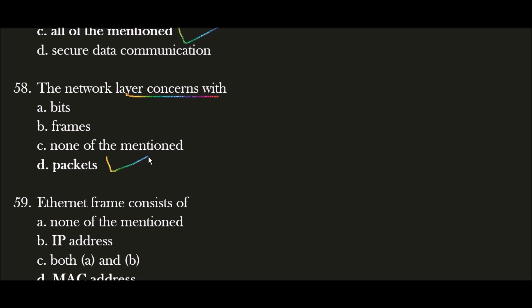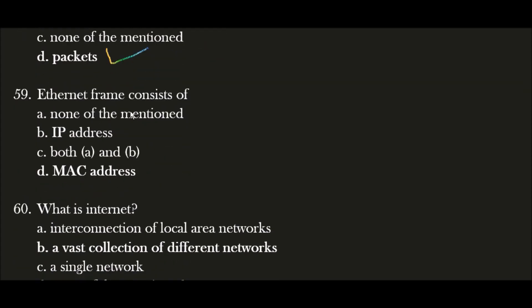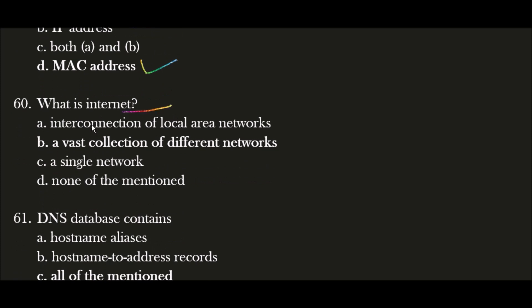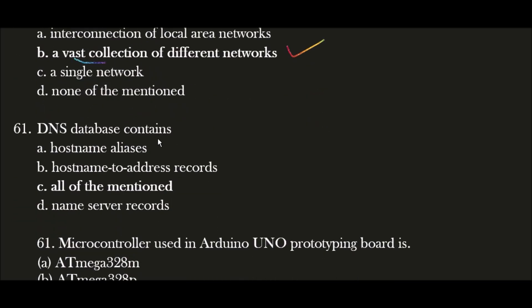Next question: Secure Shell (SSH) network protocol is used for? The correct answer is option C — all of the mentioned. SSH is used for remote command-line login, remote command execution, and secure data communication. Next question: The network layer concerns with? The correct answer is option D — packets. The network layer transmits data in the form of packets. Next question: Ethernet frames consist of? Option D is correct — MAC address. Next question: What is the internet? The correct answer is option B — a vast collection of different networks. Next question: A DNS database contains? The correct answer is option C — all of the mentioned: host name aliases, host name to address records, and name server records.